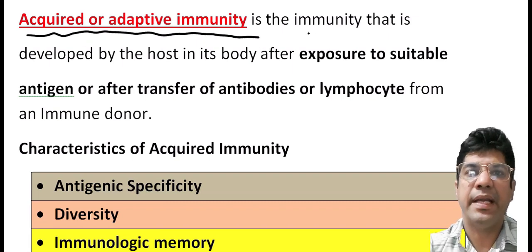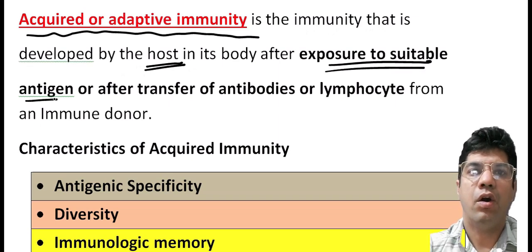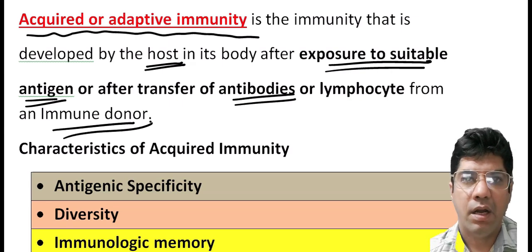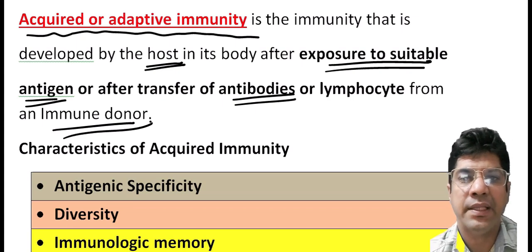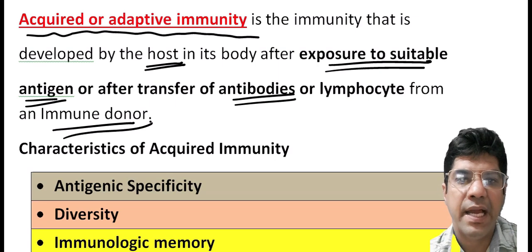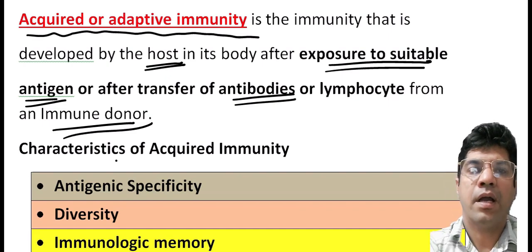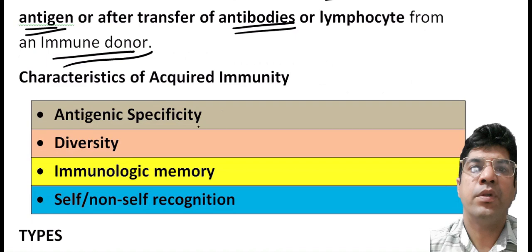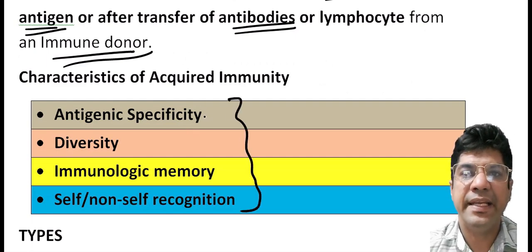Acquired immunity is the immunity developed by a host after exposure to a suitable antigen, infection, or after transfer of antibodies from an immune donor. Adaptive or acquired immunity is the resistance that an individual develops during their lifetime by recognizing and selectively eliminating specific foreign molecules or antigens. Acquired immunity depends upon four factors, the first being antigenic specificity.